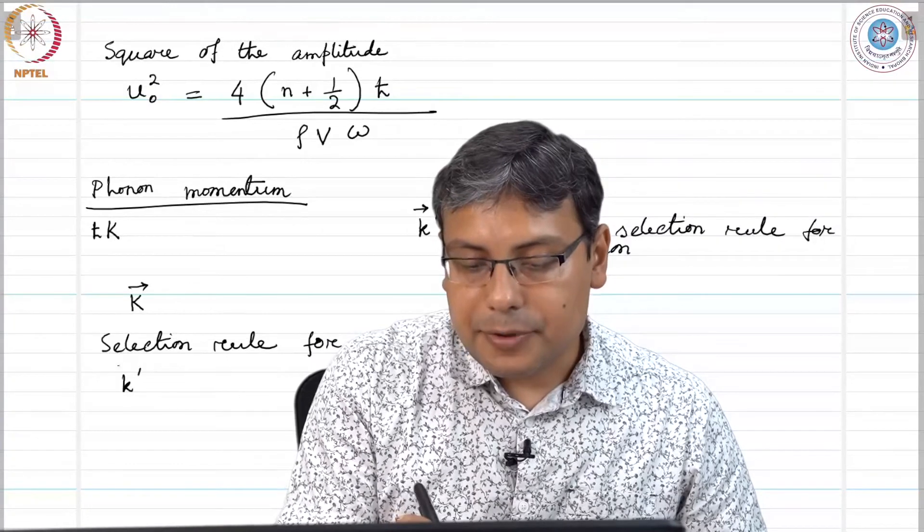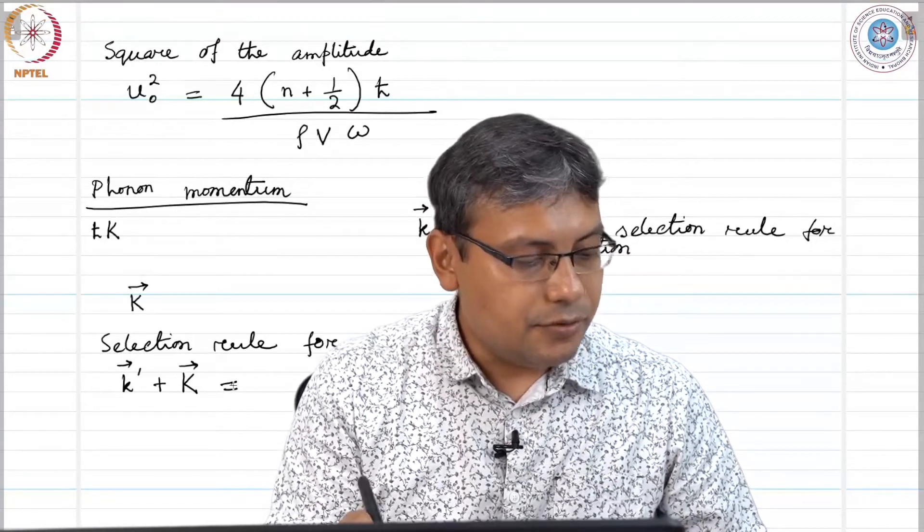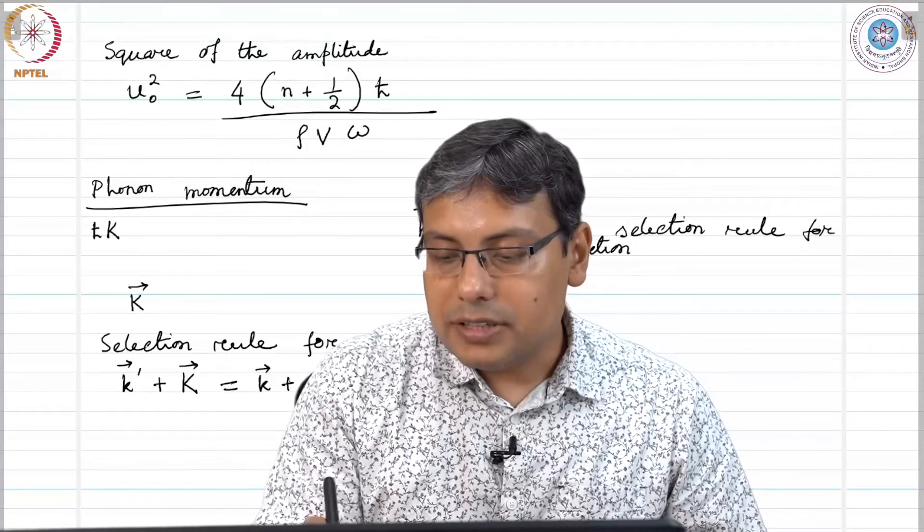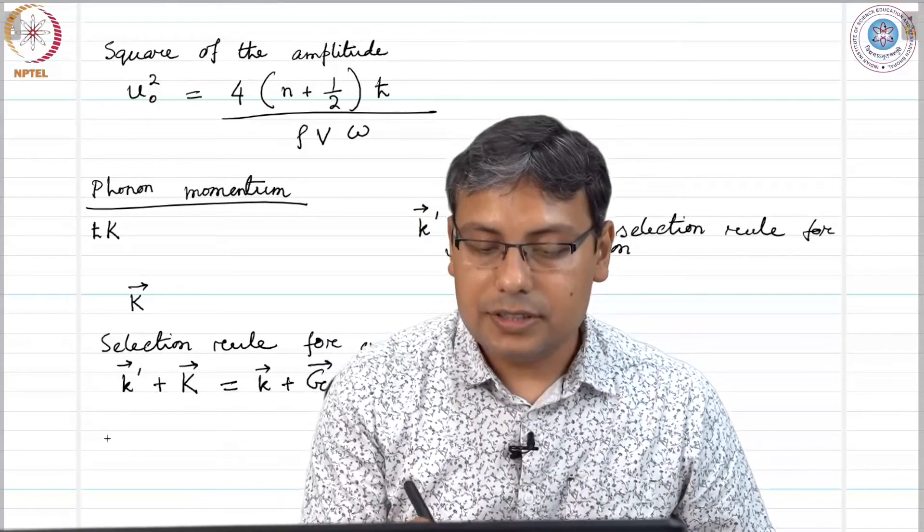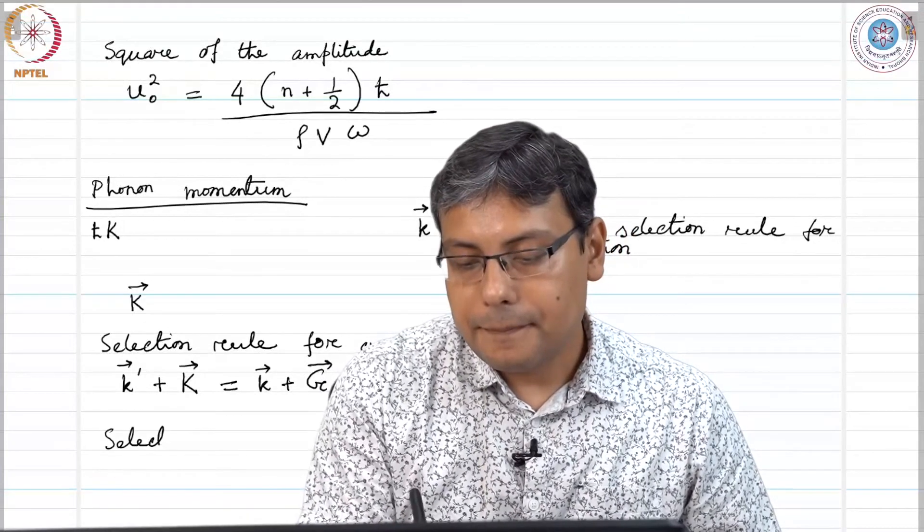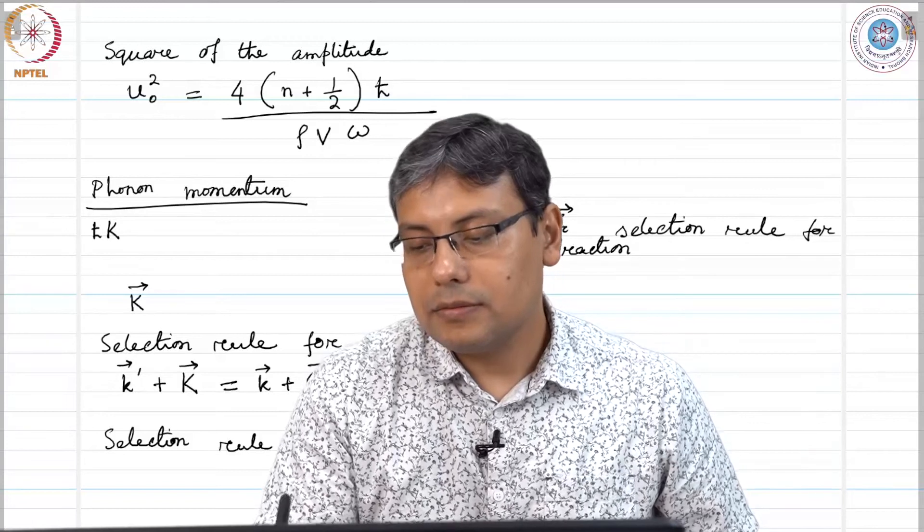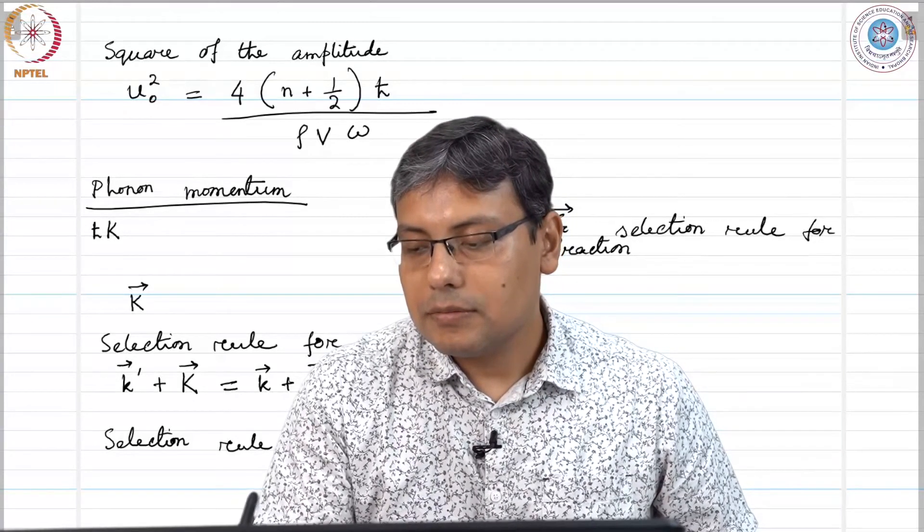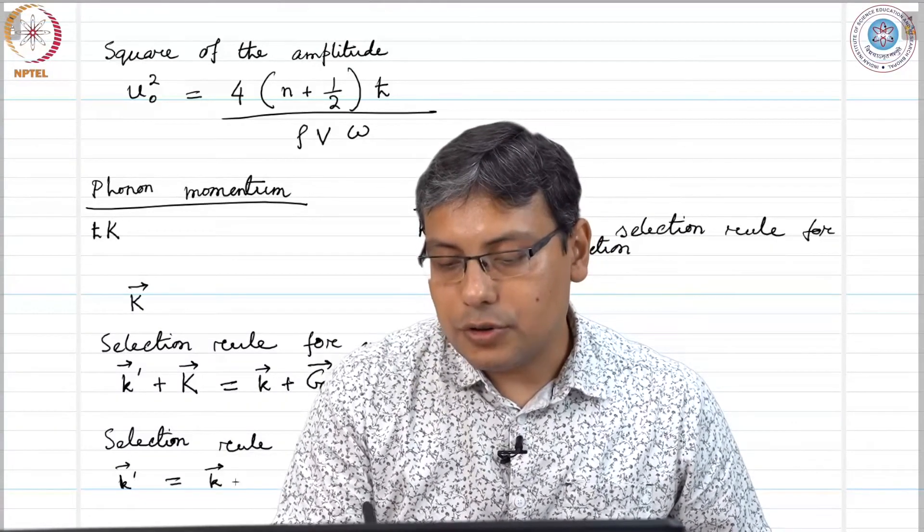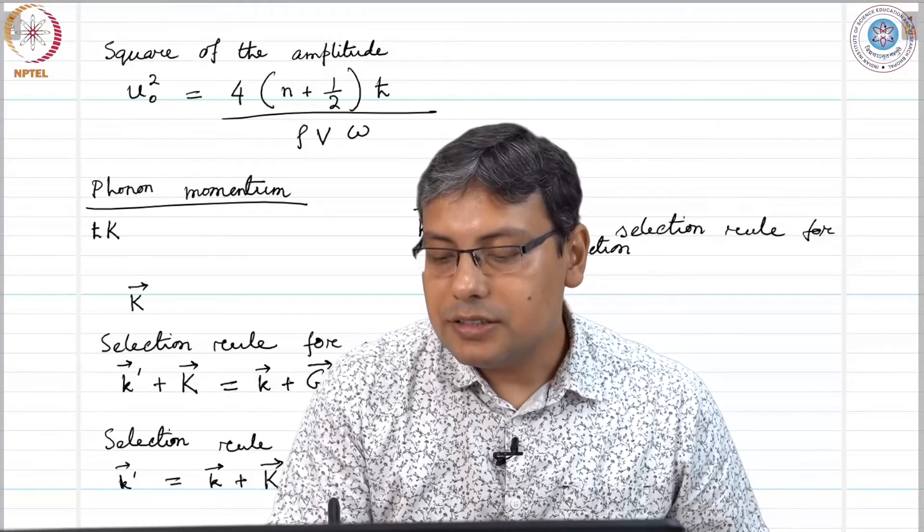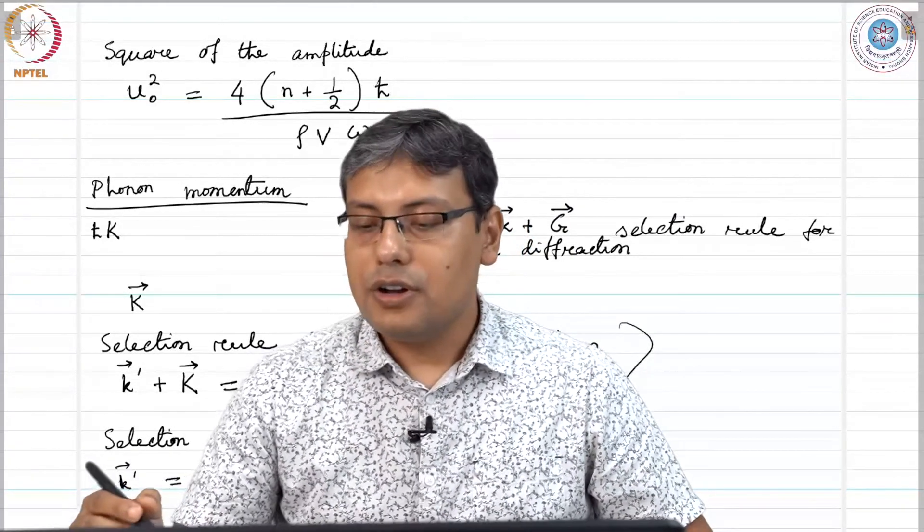Then the selection rule for creation of a phonon will become k' + K = k + G. On the other hand, if a phonon is absorbed in the process then the selection rule is k + K' = k + K + G. These are the selection rules for creation and absorption of phonons.